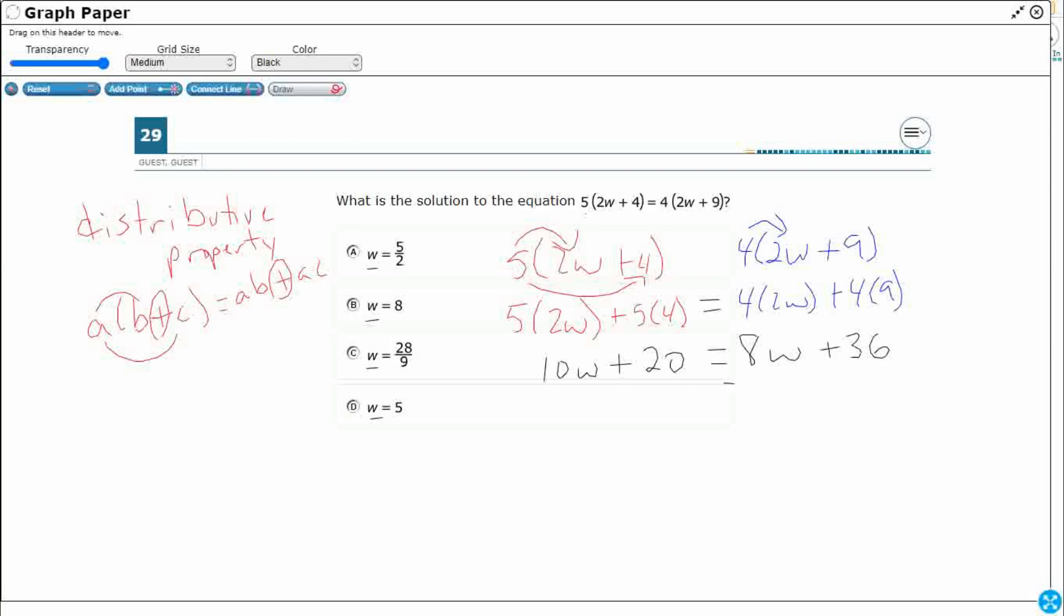So let's just go ahead and subtract 8W from both sides, right? That's our subtraction property of equality. You can do the same thing to both sides of the equation. I'm going to do that because I want this to be a positive 2W. That's going to cancel out. I could have moved the 10W over to the right, but then it would have been negative 2W. And now you have a negative you have to deal with. So it's just best practice to go ahead and do that. So now I've got 2W plus 20 equals 36.